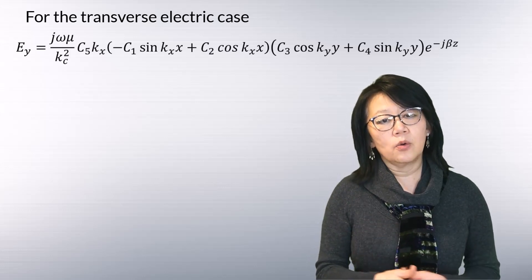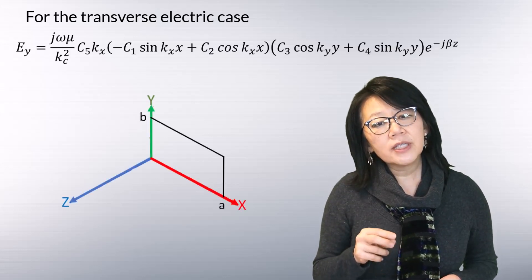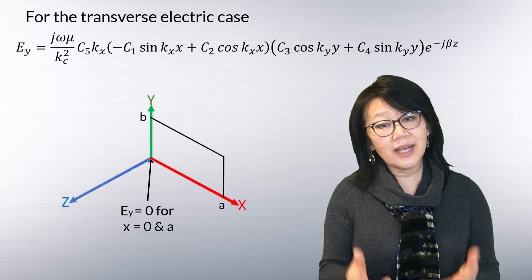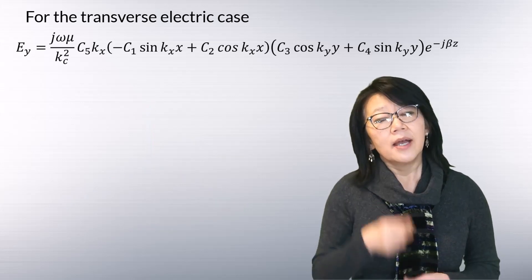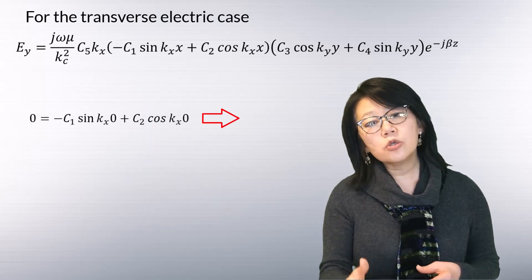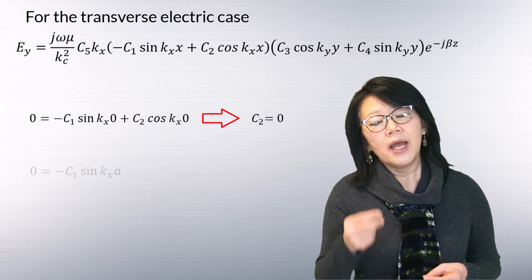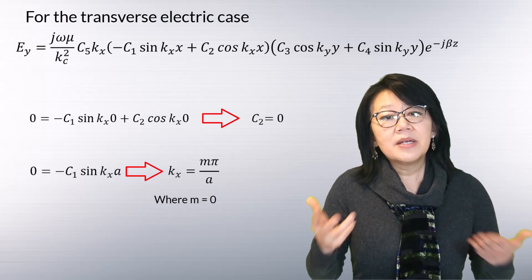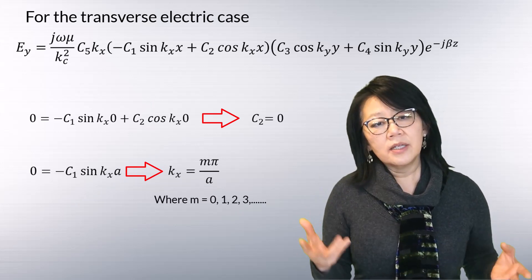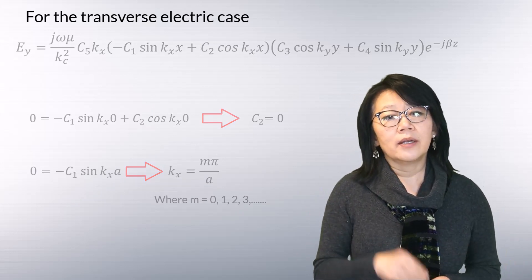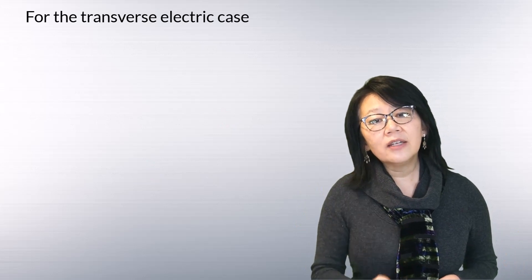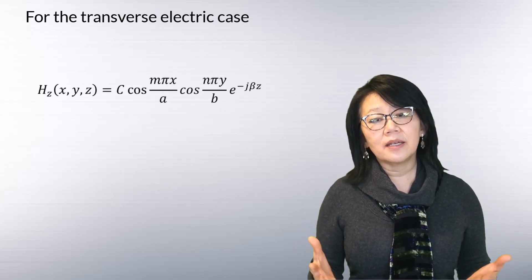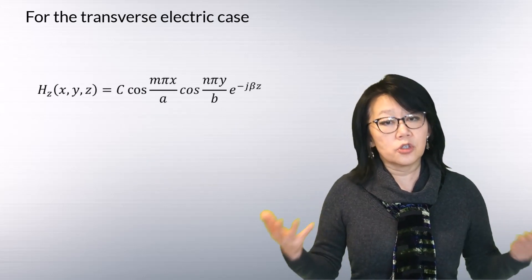Similarly, the other transverse fields for Hz along the x direction, with boundary conditions Ey equals zero at x equals zero and x equals a, give c2 equals zero and kx equals m·pi over a, where m is an integer 0, 1, 2, and so on. The final equation for the z component of the magnetic field Hz is shown here.